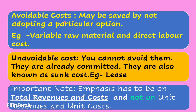Avoidable costs may be saved by not adopting a particular option — for example, variable costs, raw material, and direct labor costs. Unavoidable costs, on the other hand, cannot be avoided; they are already committed and also known as sunk costs — for example, lease payments already incurred. An important note: when discussing relevant costs and revenues, emphasis must be on total revenues and costs, not unit revenues and unit costs, since unit figures vary depending on the level of output.